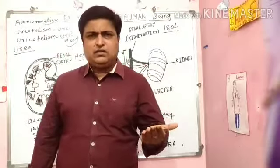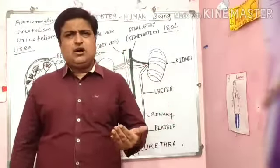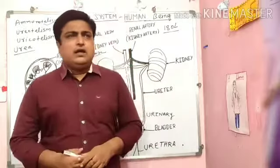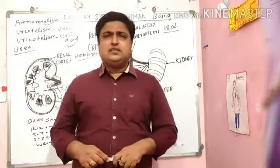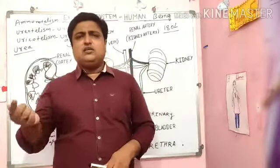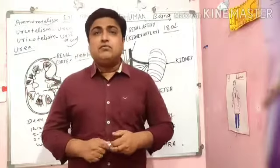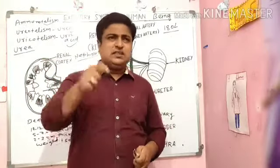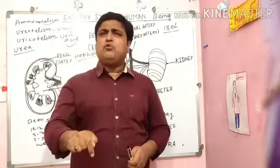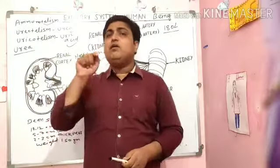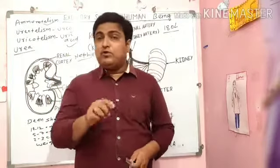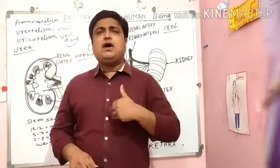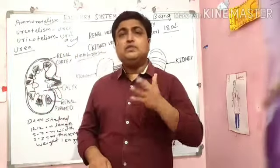What is urea and how does it come into our body? Urea is a nitrogenous waste, and this nitrogenous waste comes from protein. Protein is the waste product of protein substances, and protein is an important constituent part of our food.